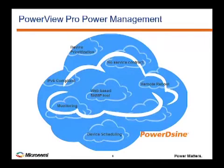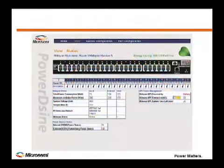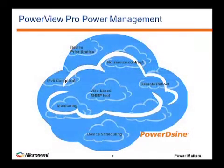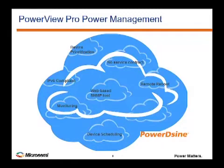Certain PowerDesign PoE midspan models also come with PowerView Pro. It's a cloud-based power management platform that lets you reduce power consumption while easily managing field-based devices. Device Scheduling lets you schedule devices on and off during periods of planned use. Device Prioritization allows you to improve utilization of the UPS in case of external AC power failure — devices can be prioritized to power down based on remaining power. It also lets you remotely reboot devices, thereby eliminating costly service calls when a device goes down. All of this is built into the purchase price of the device with no additional service contract.